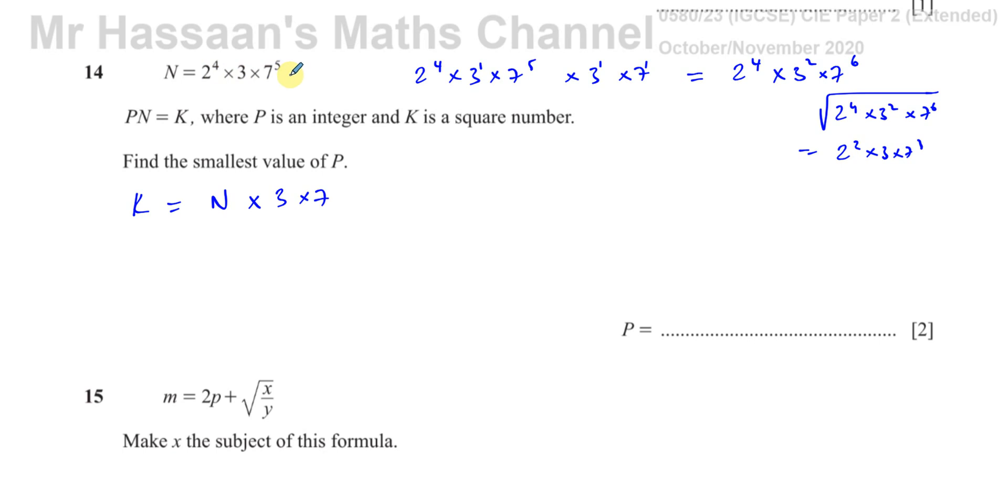Okay, so this is a square number because all the indices have even powers. So, what did I have to do to make it become this? Well, I had to multiply it by 3 times 7. So, we know that k is going to be n times 3 times 7, which is going to be 21 times n. So, k is 21 times n.